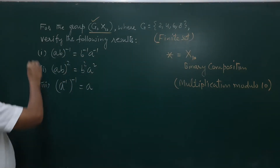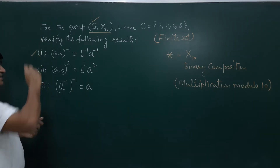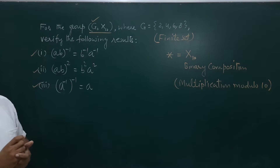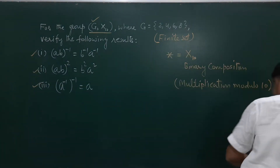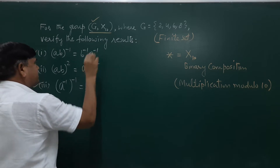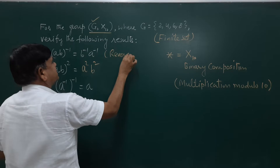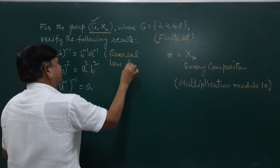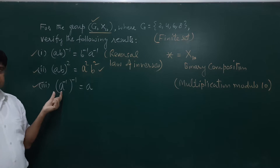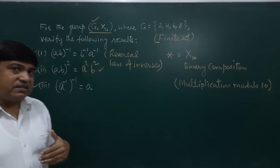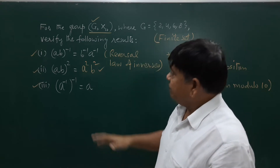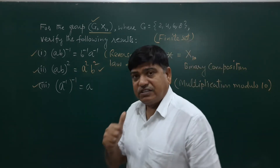We are asked to verify the following properties, which we have already proved as theorems. The first is the reversal law of inverses: (AB)⁻¹ = B⁻¹A⁻¹. The second is A² expressed appropriately. The third is that the inverse of the inverse of an element is the element itself. These three results we will verify using this particular set.